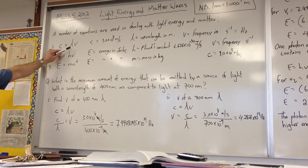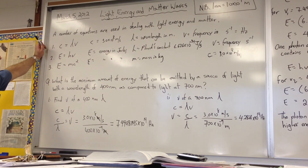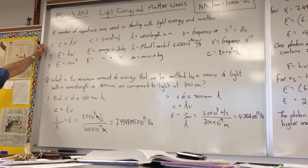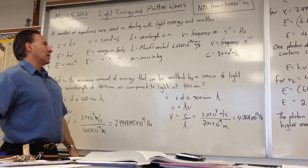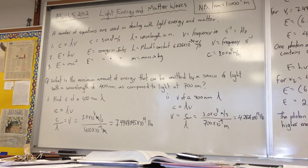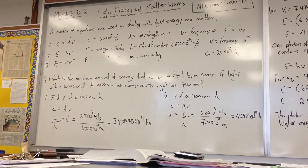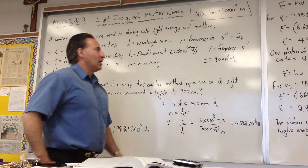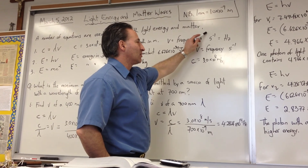C is equal to lambda nu. This symbol here is actually pronounced 'nu' — it's a Greek letter. It's one of the three equations used when dealing with light energy. C represents the speed of light, which is 3 times 10 to the 8 meters per second. Lambda symbolizes the wavelength of light in meters, though very often it's written in angstroms or nanometers. And nu is the frequency, with units of seconds to the minus one — meaning cycles per second.